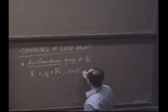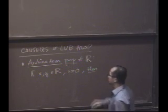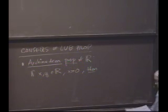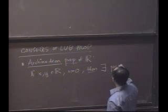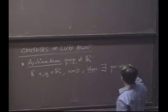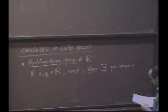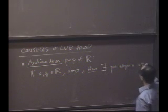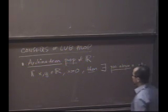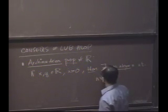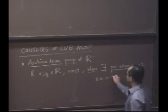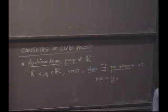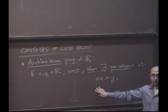then I claim the following is true, that there is a positive integer, little n, such that you can multiply n times x, and eventually one of those multiples will be bigger than y. Okay, that seemed pretty self-evident.